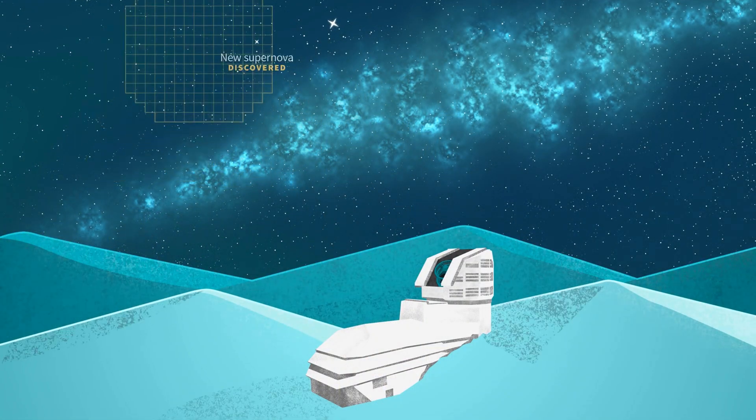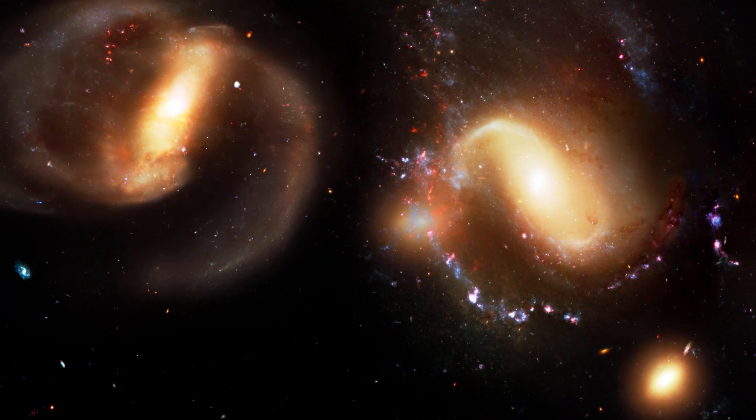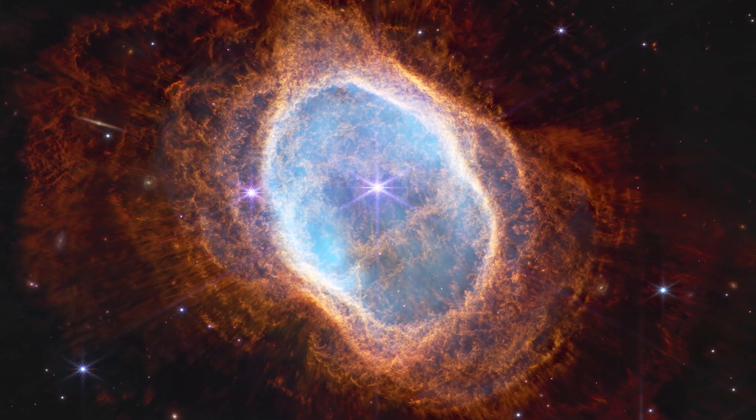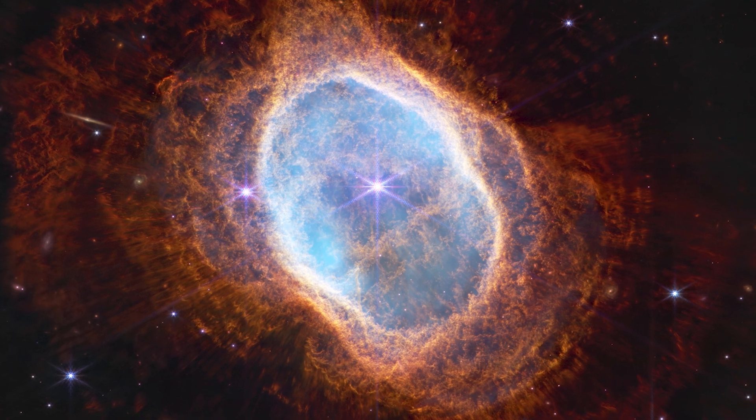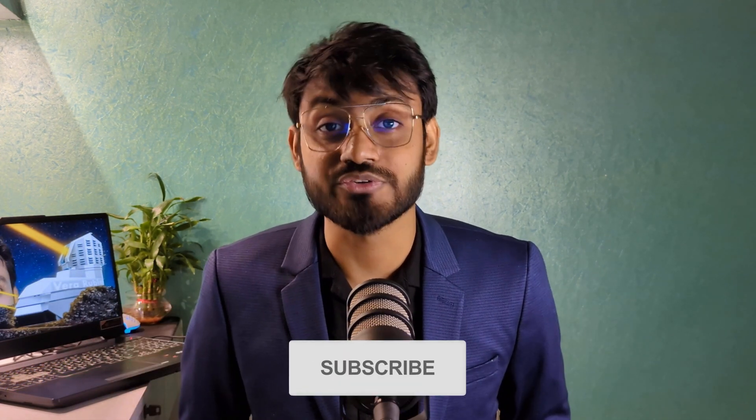Rubin maps the distribution of dark matter via weak lensing, which is a phenomenon in which the light from distant sources is slightly distorted by the gravity of intervening mass. Webb can study individual lensing galaxies and distant supernovae in detail. Together they form a powerful duo that fills gaps in each other's capabilities to create a more comprehensive understanding of the universe.